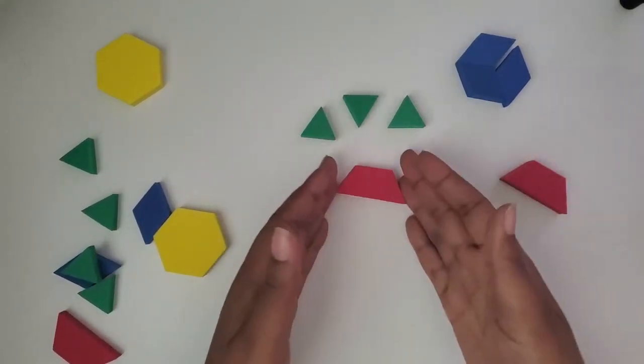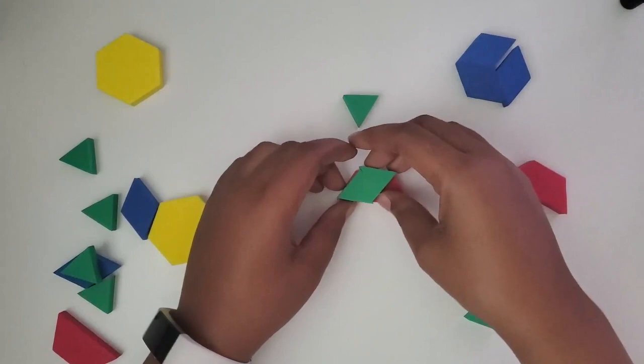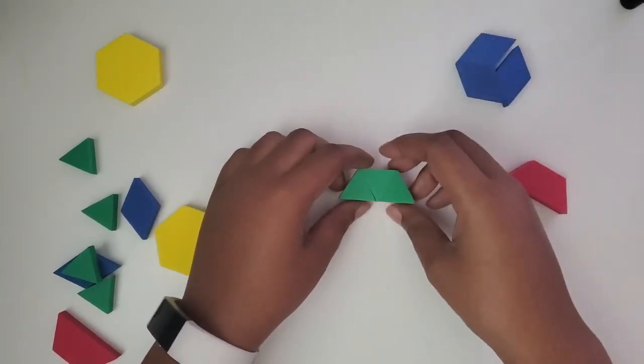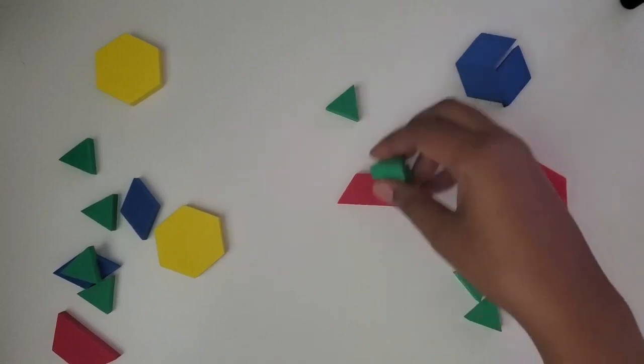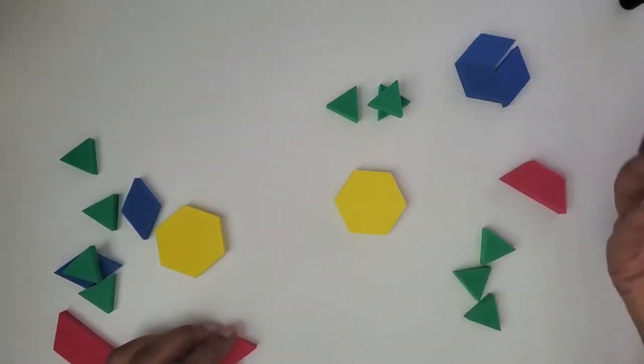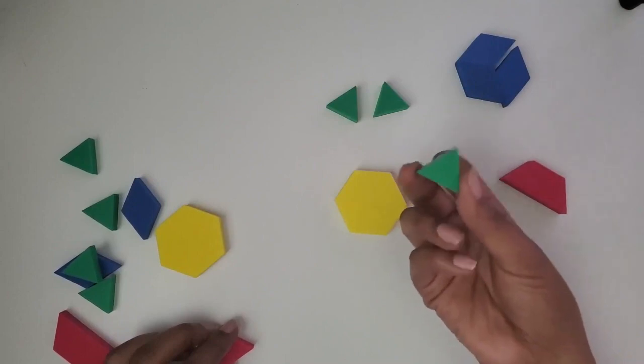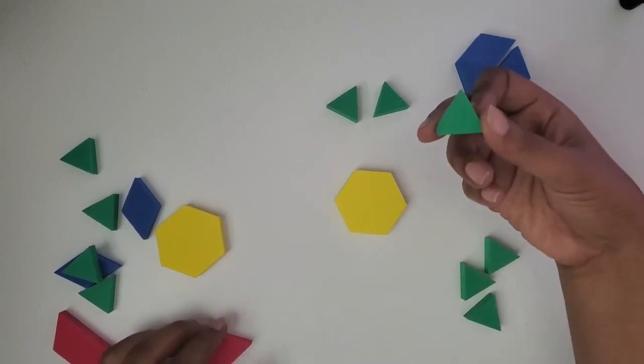Right now, if this was my whole, I would need three triangles to be equivalent to that whole, and each triangle would represent a third. If the hexagon was my whole, then I would need six of these, and then the triangle becomes a sixth.